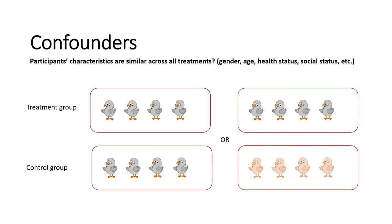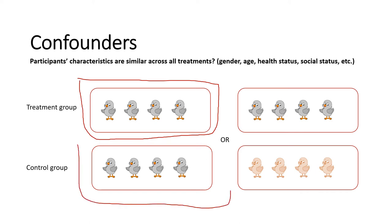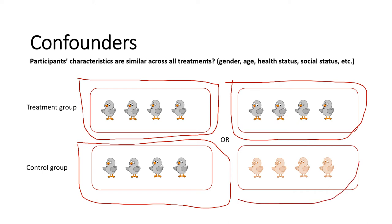Another type of bias involves confounders — whether participant characteristics are similar across all treatment groups regarding factors such as gender, age, health status, and social status. Using the duck example: if the treatment group contains healthy gray ducks but the control group contains a different species of yellow ducks, those differing species characteristics become a confounder that impacts both the independent variable and the dependent variable.